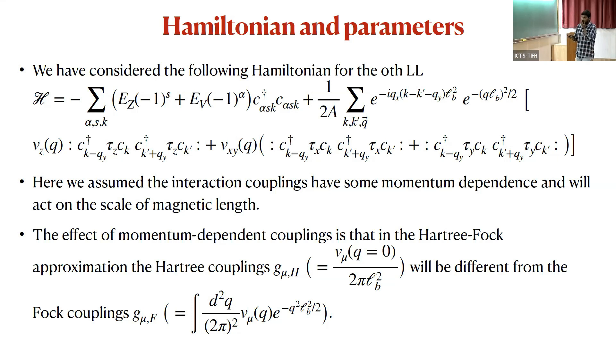We have these four-fermion interaction terms. If you closely look at the interaction term, it behaves like XXZ interaction but acts on the valley space. The crucial point we introduced in our calculation is that we assume this interaction strength in general depends on the momentum and acts on the scale of the magnetic length. Because of this momentum dependence, when you solve this problem using the Hartree-Fock approximation, the Hartree-Fock couplings will be in general different. The Q=0 term will be different than the Fock couplings. We have tuned these parameters independently to get the phase diagram.